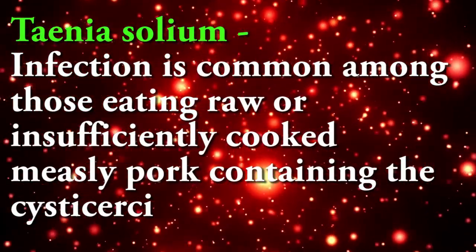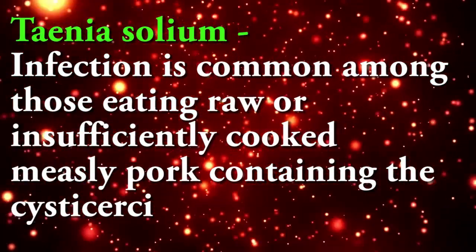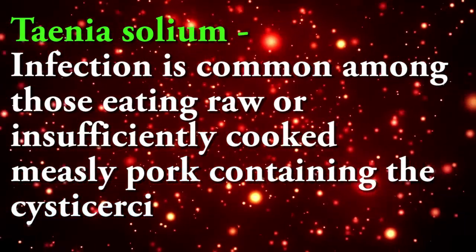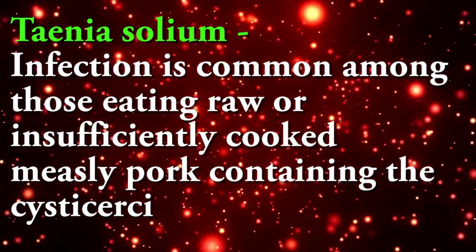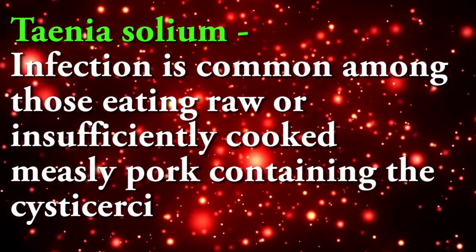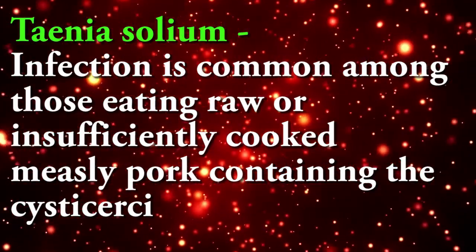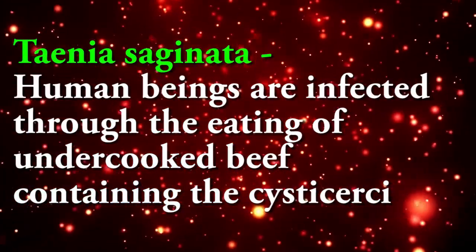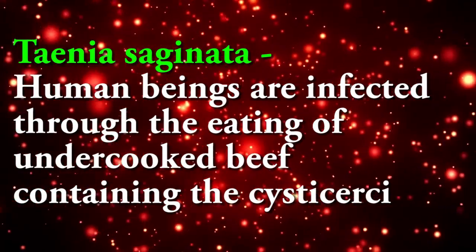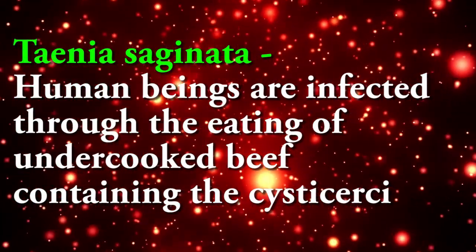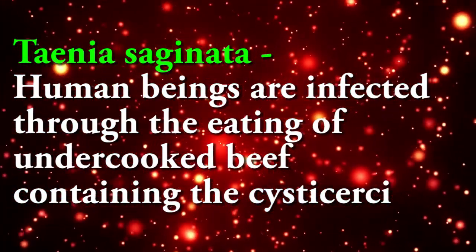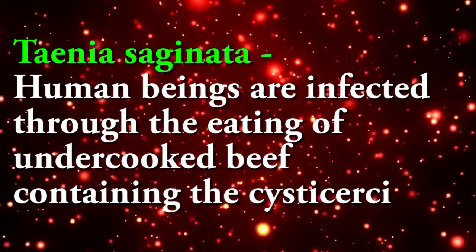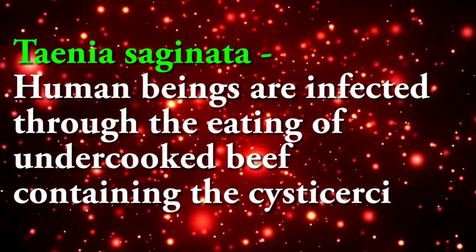Transmission: Taenia solium infection is commonly acquired by eating raw or insufficiently cooked measly pork containing the cysticerci. Taenia saginata infects human beings through the eating of undercooked beef containing the cysticerci.